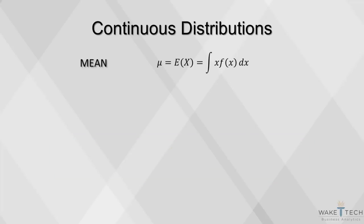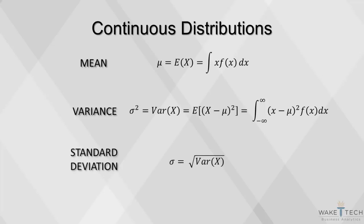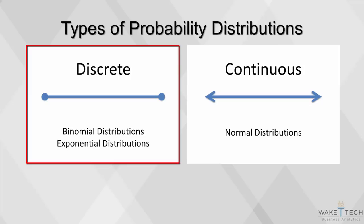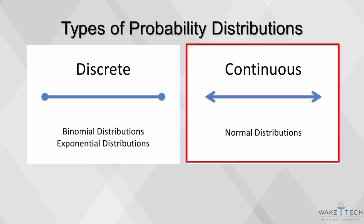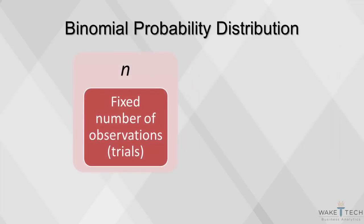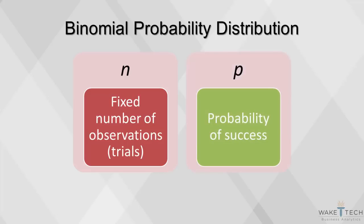These are the formulas for working with continuous distributions. A probability distribution visually summarizes the probabilities associated with all possible events for a variable. We will focus on three probability distributions commonly used in explaining real-world events. Binomial and exponential distributions are used with discrete data, while normal distributions are used with continuous data. A binomial distribution is a discrete distribution that represents the number of successes in n independent trials, each of which has probability of success p. Each trial has a binary outcome.